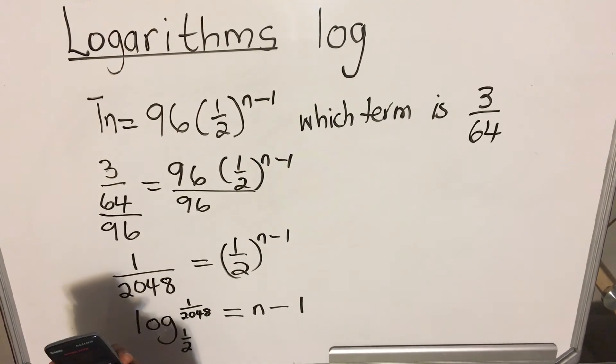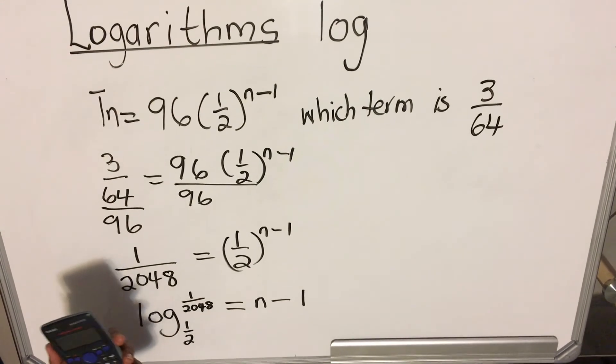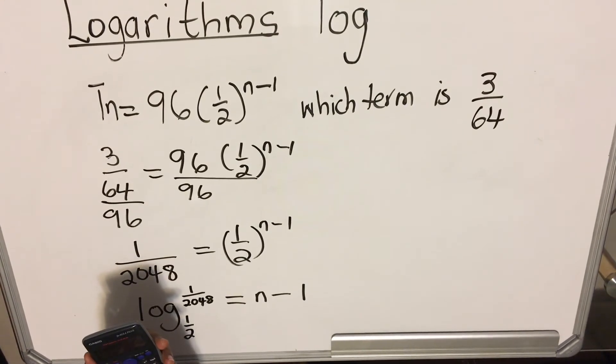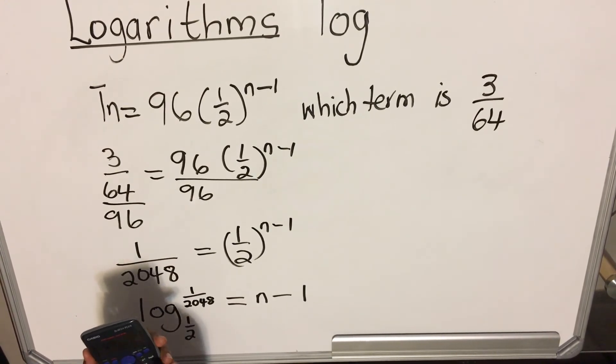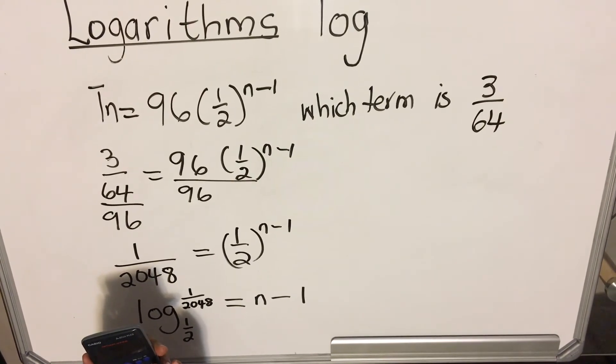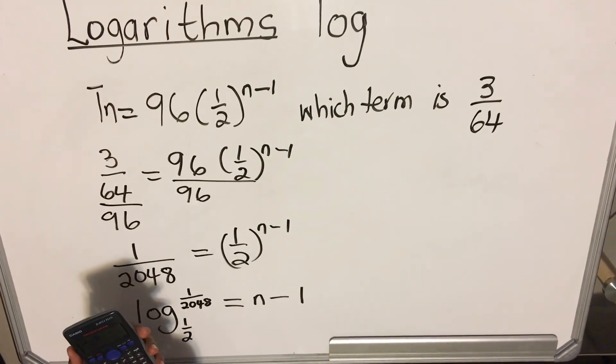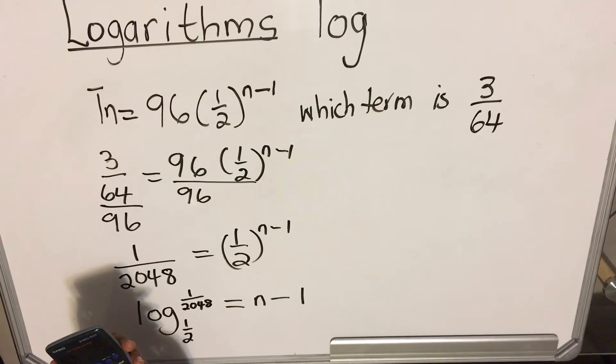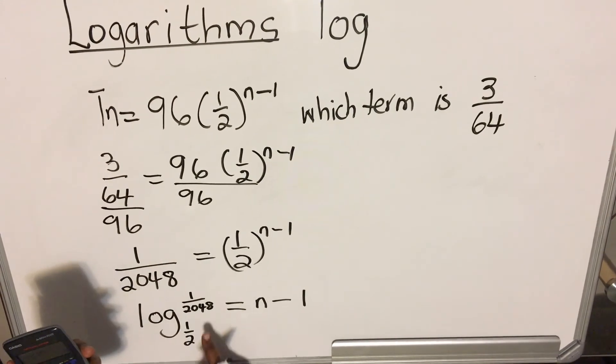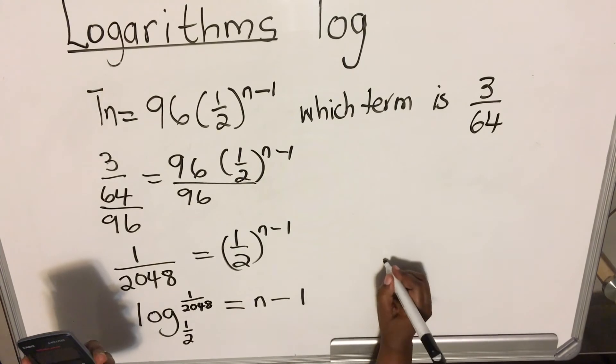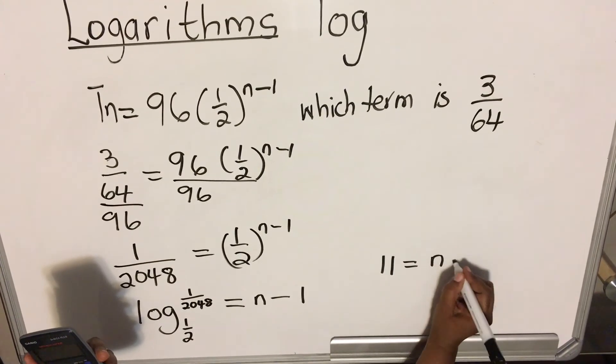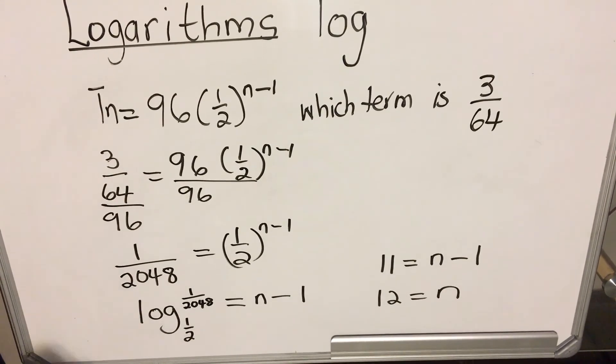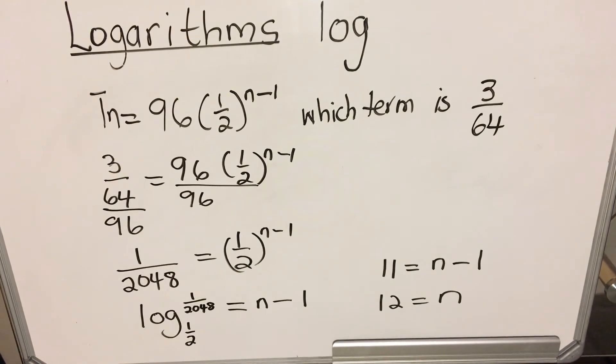Then we take your calculator. You punch in that log that has the base. And then our base is 1 over 2. And then our number is 1 over 2048. Then we find that all of this is 11. So we have 11 is equals to n minus 1. Then we take the one to the other side. 12 is equals to n. So the number of terms are 12. It's easier when you use the log.